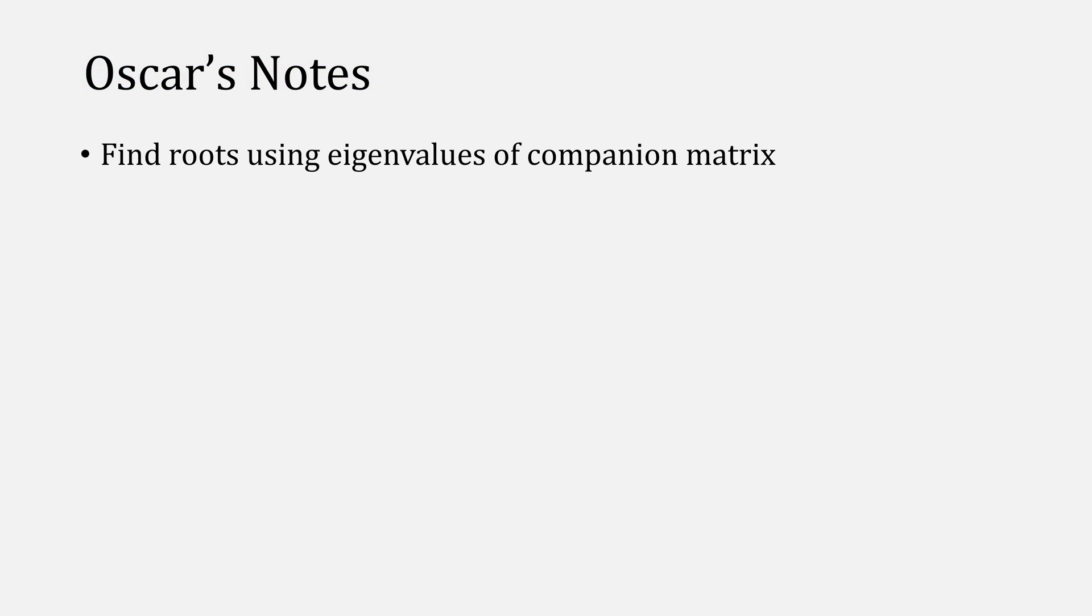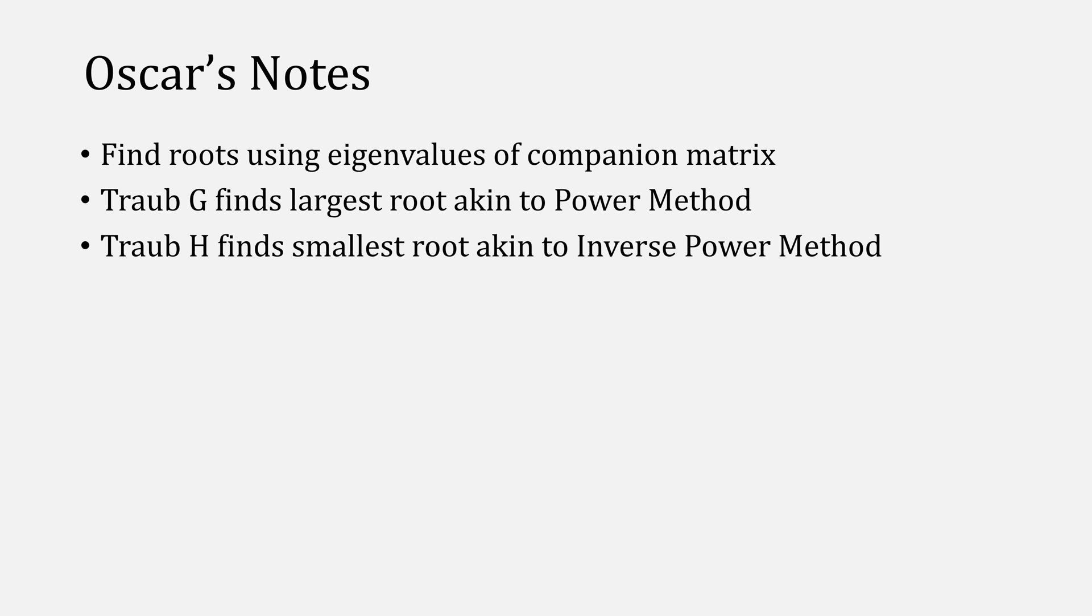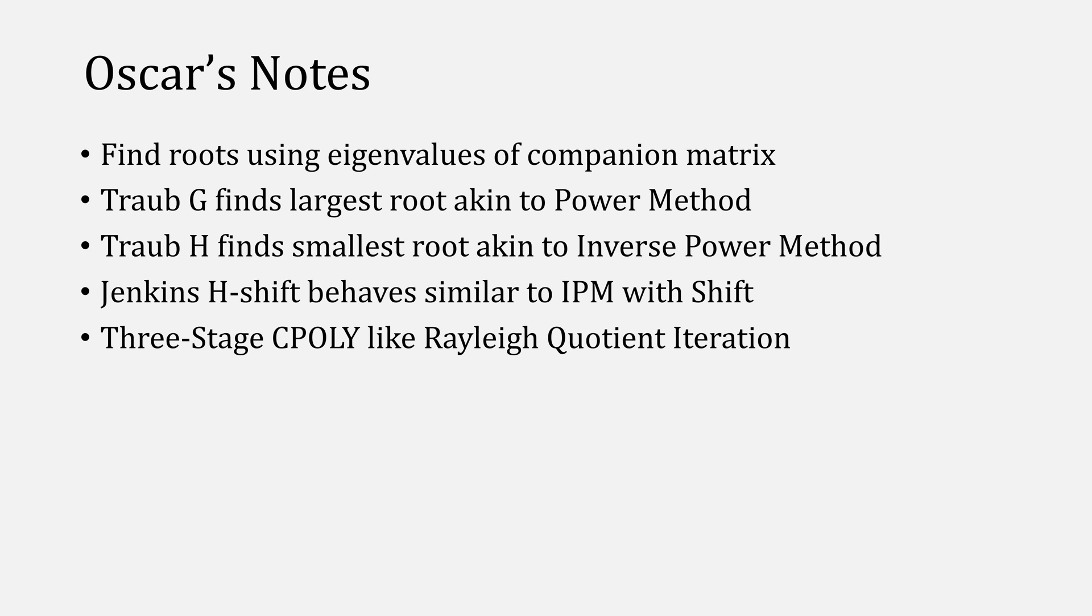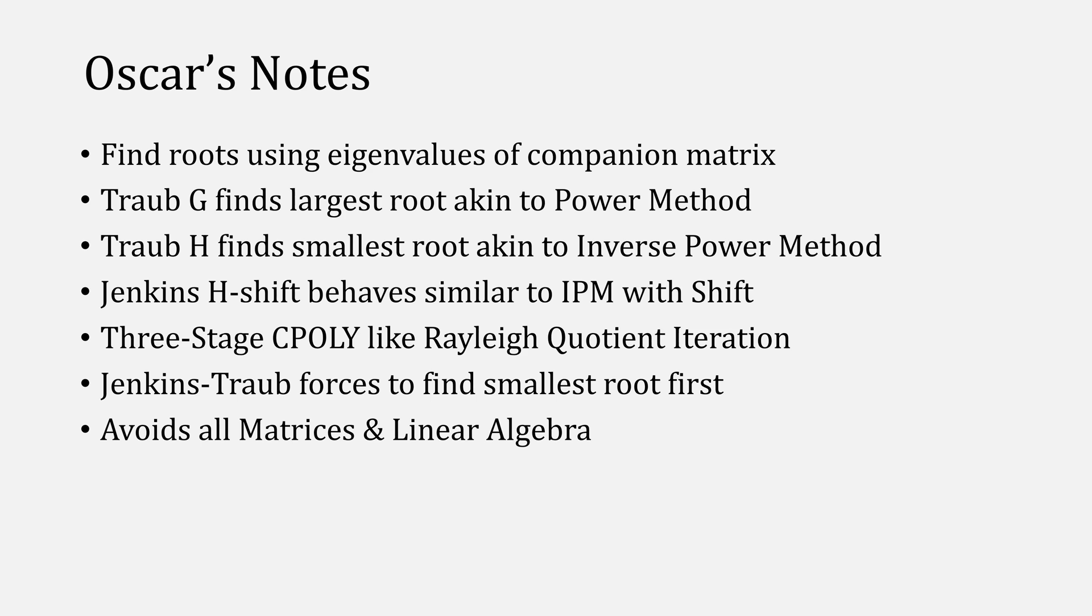A few things to note are that you can find roots by using the eigenvalues of the companion matrix, and Traub's g polynomial is akin to the power method, while his h polynomial is akin to inverse power method. Jenkins-Traub's h shift behaves similar to the inverse power method with the shift, and applying the third stage makes it behave like Rayleigh quotient iteration. Jenkins and Traub do make one small change, which is to force convergence to the smallest root, and the method avoids all forms of matrices and linear algebra. It also doesn't mind multiplicity or root distribution. The order for the Jenkins-Traub method is 2.618.